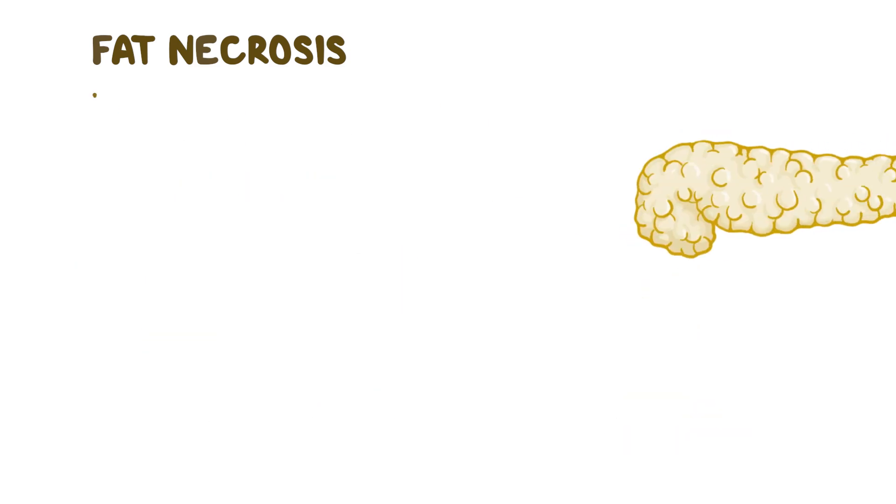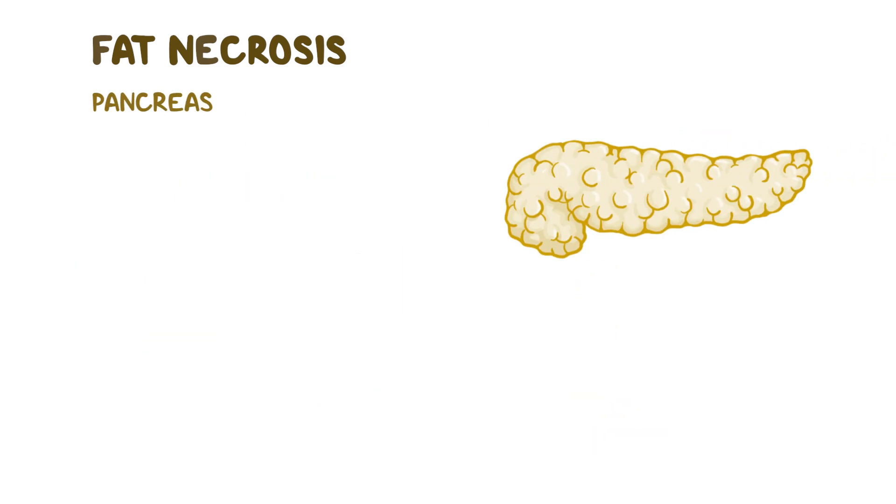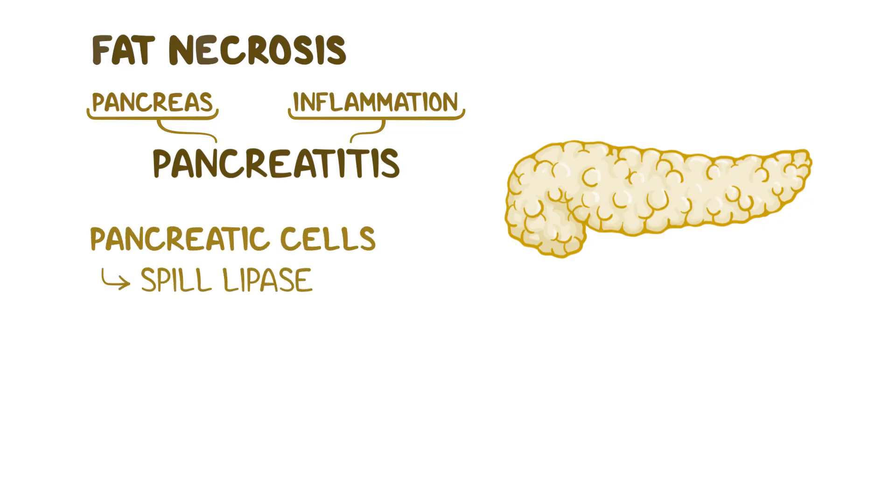Now, in addition, the pancreas can also undergo fat necrosis as a result of inflammation, called pancreatitis. With pancreatitis, the pancreatic cells spill lipase around the pancreas. Lipase helps digest fats, so it causes fatty acids to spill out of the fatty retroperitoneal tissue that's adjacent to the pancreas.